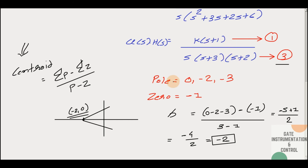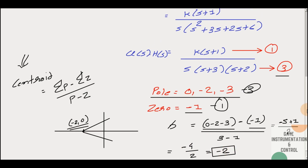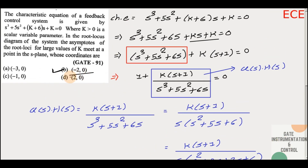The number of poles and zeros can be calculated directly by inspection. The pole values here were 0, −2, −3, whose sum is −5, and the zero value was −1. So numerator becomes −5 − (−1) = −4, and denominator is 3 − 1 = 2, giving centroid = −2.